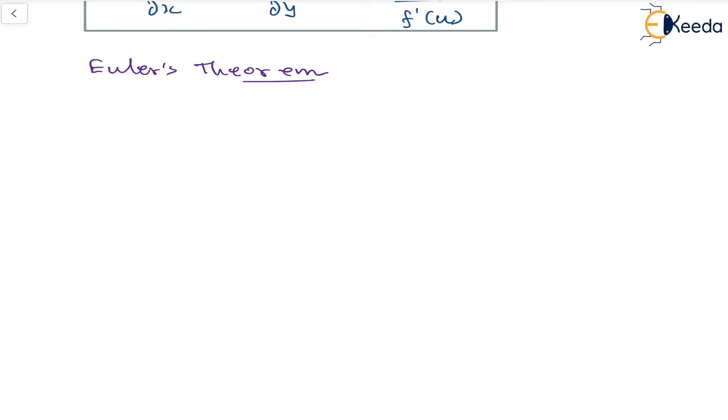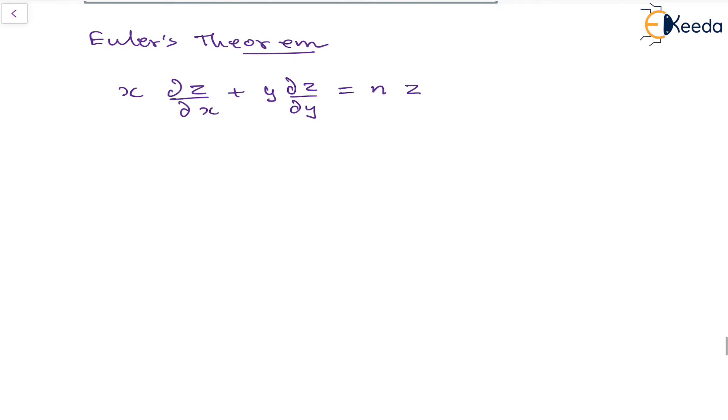Therefore, we will have x dz/dx plus y dz/dy equal to n times z. Writing in terms of f, we will have x dz/dx plus y dz/dy equal to n times f(u).